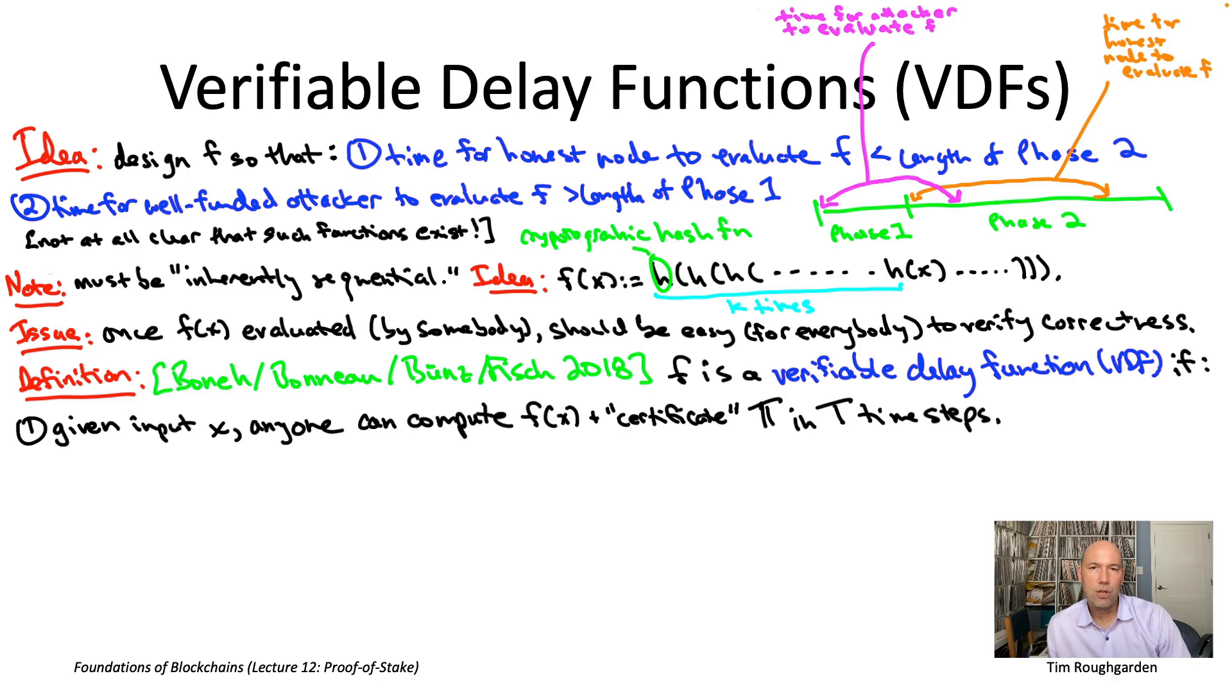Again, that's going to correspond sort of roughly to the duration of phase two in a randomness generation protocol.